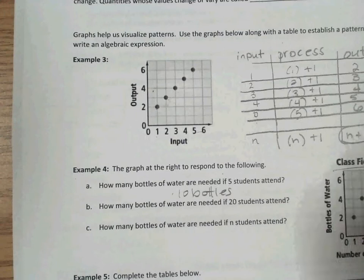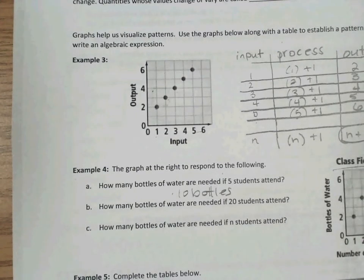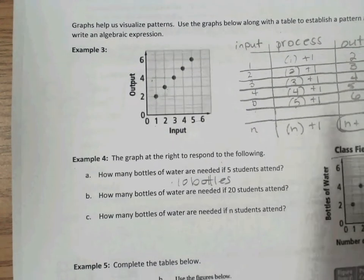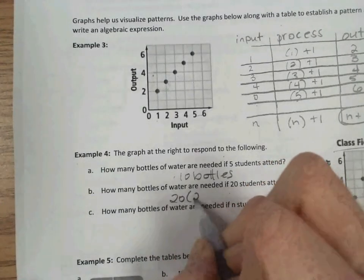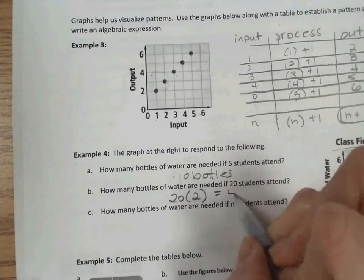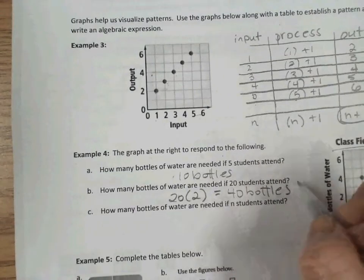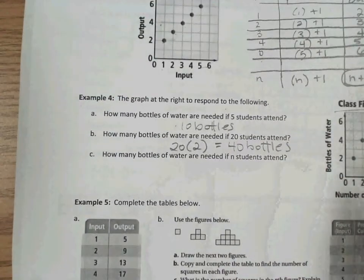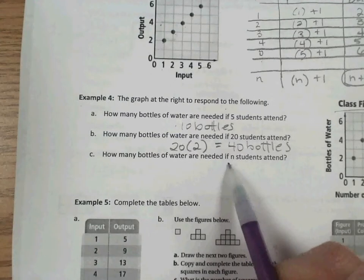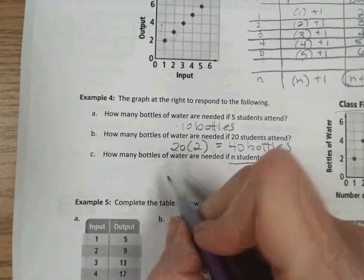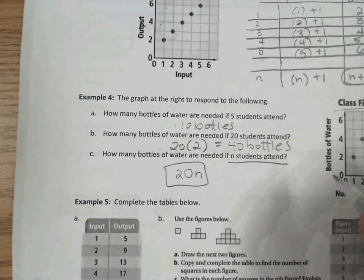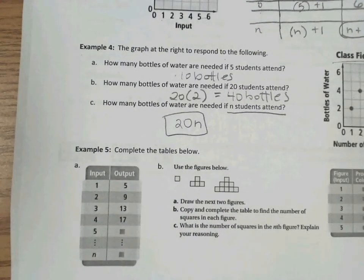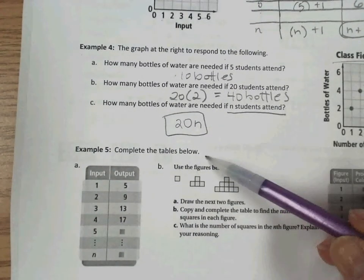So how many bottles of water are needed if 20 students attend? So it's become evident, hopefully, that each student needs 2 bottles of water. So for 20 students, we would need 2 bottles each for a total of 40 bottles. And lastly, how many bottles of water are needed if n students attend? So we would just make our rule 2n.